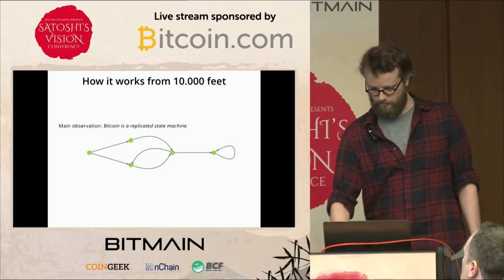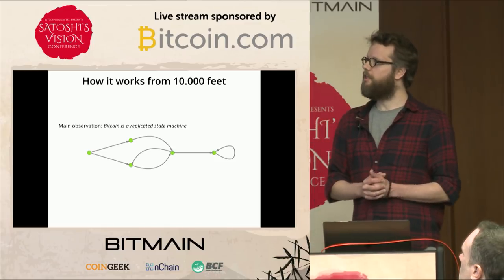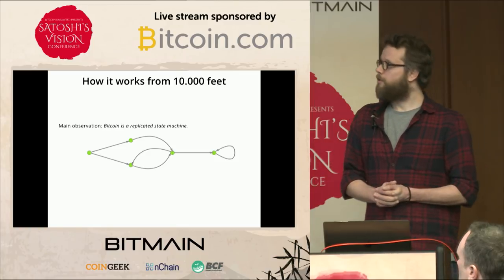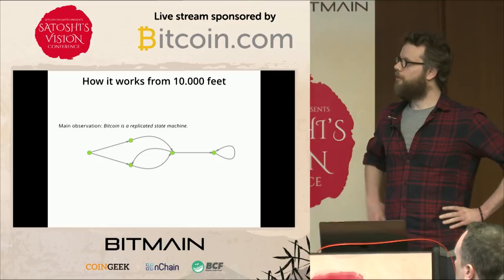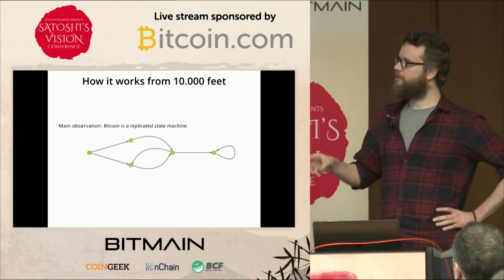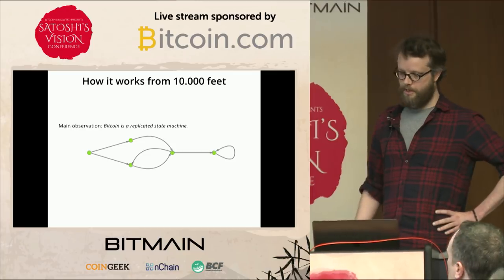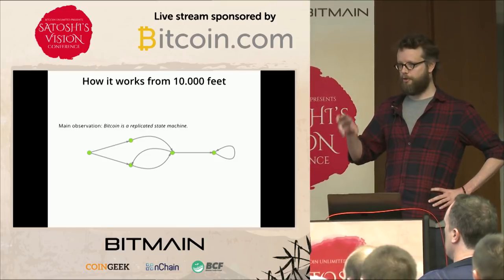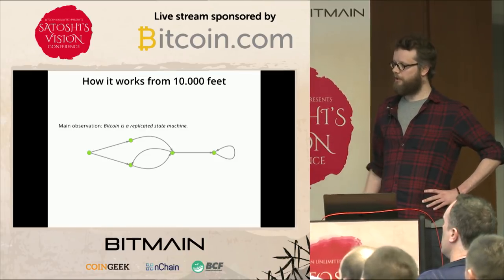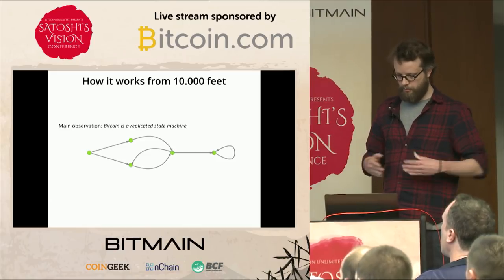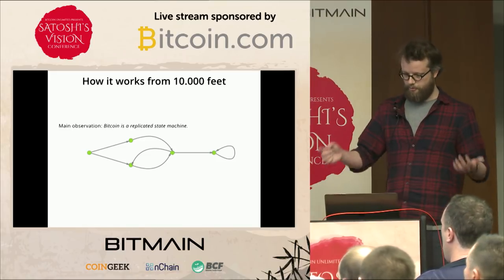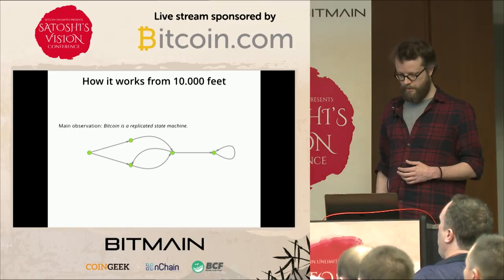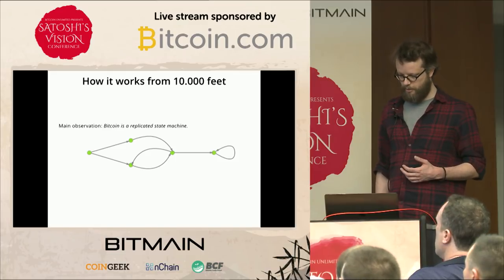Quick overview: first I'll give you the basic idea from 10,000 feet — why this isn't an audaciously crazy claim. Then, since I don't have time to present an actual proof, I'll present an application that shows all the main techniques used in the proof. Finally, I'll talk about related work and discussion. The basic observation is that Bitcoin can be thought of as a replicated state machine.